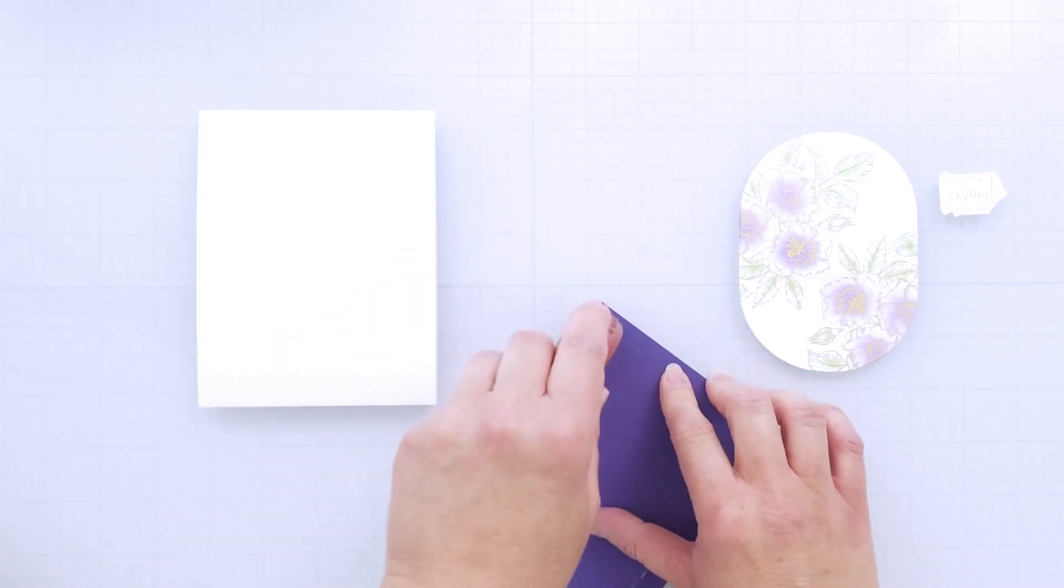So I'm adding my inked and embossed background panel directly to a top folding A2 sized white card base with tape runner, foam adhesive behind my foiled oval, and then I've also foiled the Better Press sentiment plate that comes with the system too, and I've fussy cut that out and added it to the top corner with more foam adhesive to embellish.